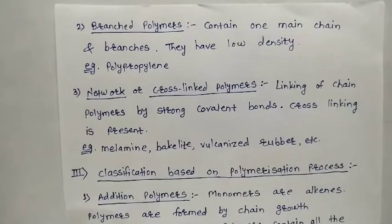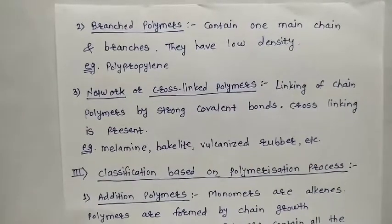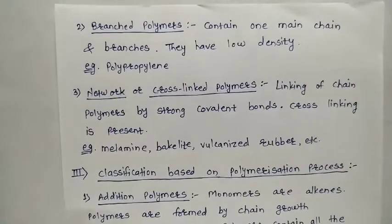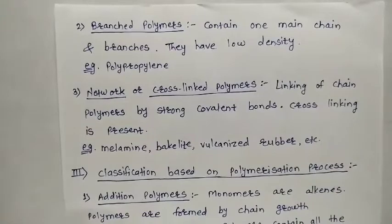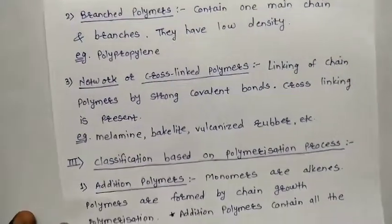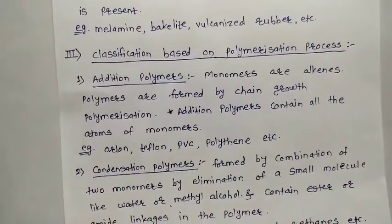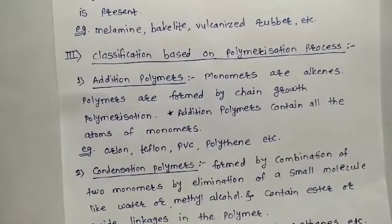Branched polymers have low density — remember that. An example is polypropylene. The third type is network or cross-linked polymers. In cross-linked polymers, the linking between chains is always by strong covalent bonds, and therefore they are called cross-linked polymers. An example is melamine.